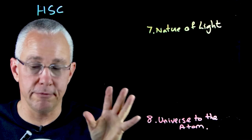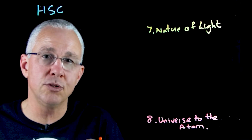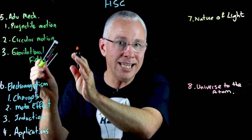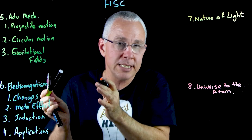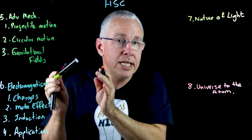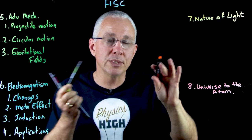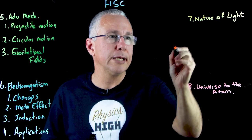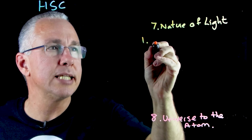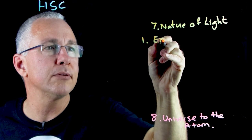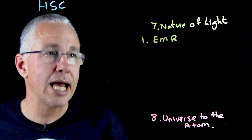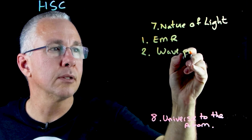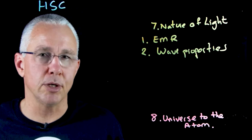That rounds out the first half of the year. We now look at the Nature of Light, where we begin to move from classical physics into modern physics. Classical physics covers the principles laid down over the last 500 years, right up until the beginning of the 1900s. The first inquiry question explores what electromagnetic radiation is and how our understanding of it was developed. The second looks at the wave properties of light, building on the foundation of the waves topic you covered in Module 3 in year 11.